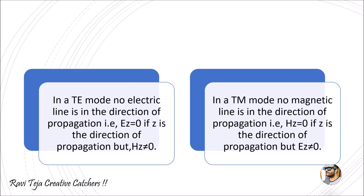In a TE mode, no electric line is in the direction of the propagation, which means the electric field at the z direction is equal to 0. That is why Ez is indicated as 0. The magnetic field, indicated by H, in the z direction in TE mode is not equal to 0, because this magnetic field along the z direction is propagating in the waveguide.